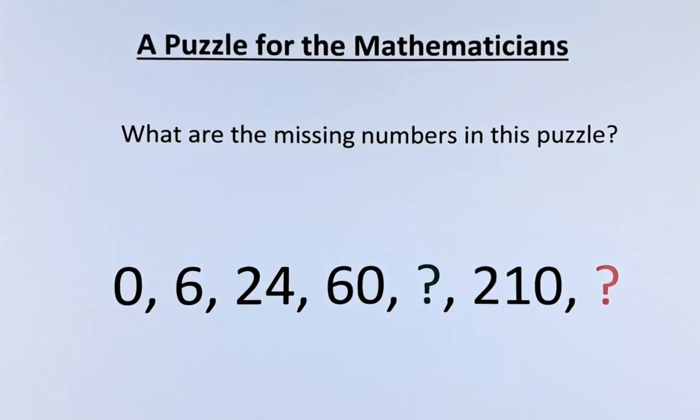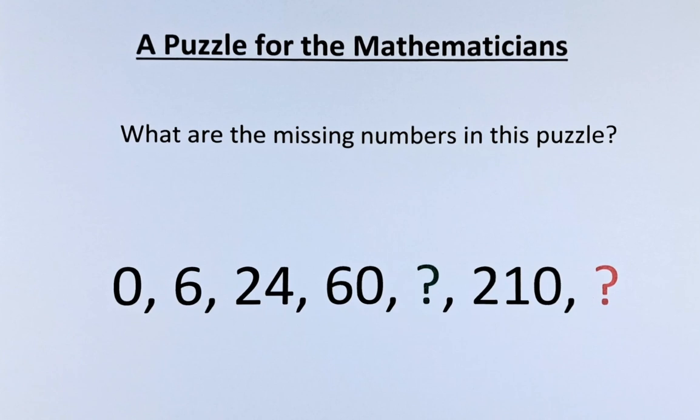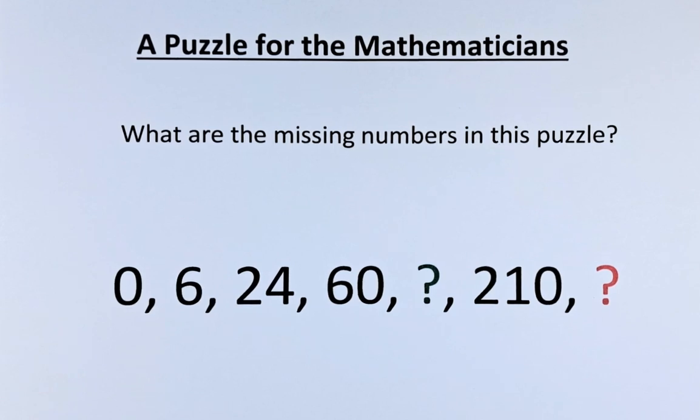The numbers in the puzzle are as follows. It starts with 0 followed by 6, 24, 60, a green question mark, 210 and the red question mark. As usual we need to know what are the numbers represented by the two question marks.